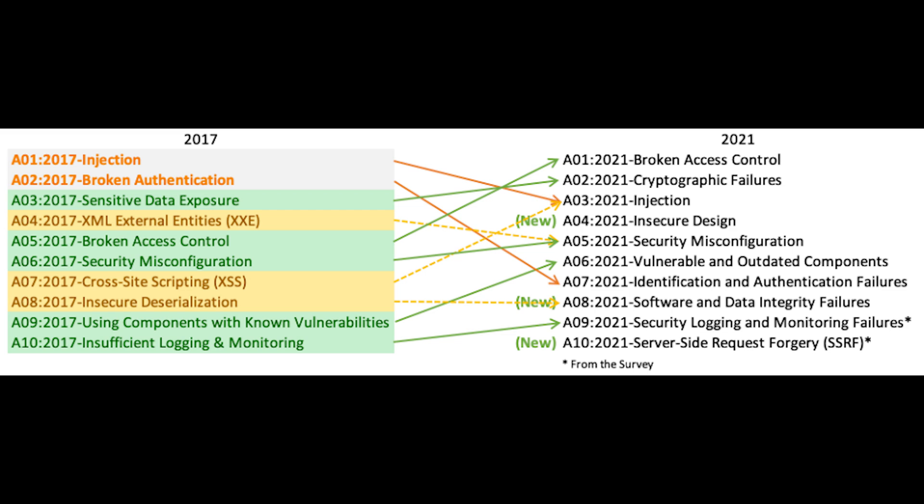Next, we have vulnerable and outdated components. No matter how secure your own code is, attackers can exploit APIs, dependencies, and other third-party components if they are not themselves secure. Static code analysis tools can help developers find insecure components in their code before they publish an application.